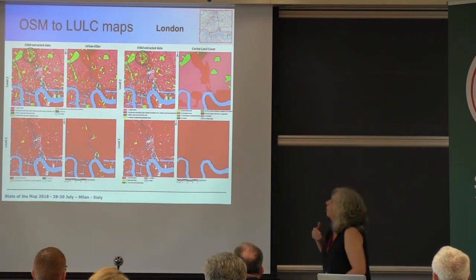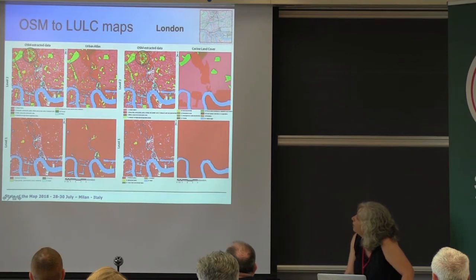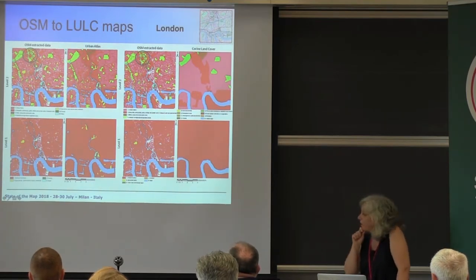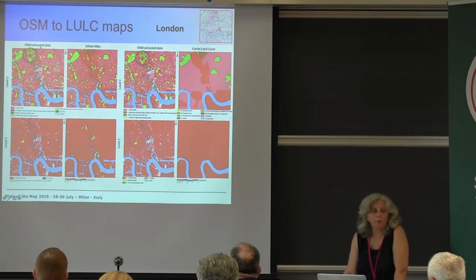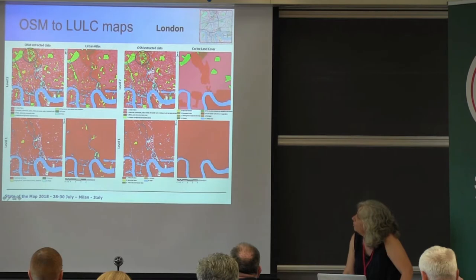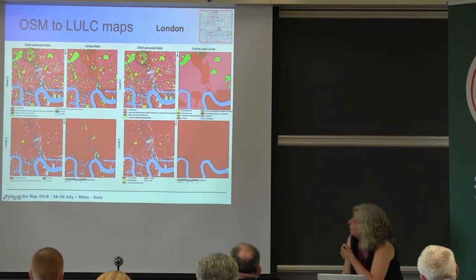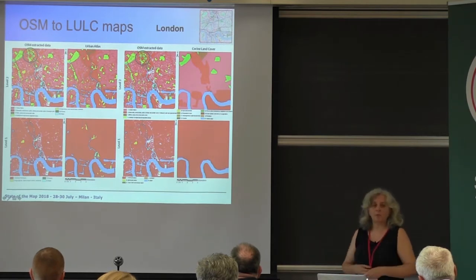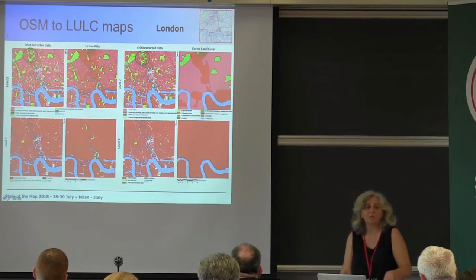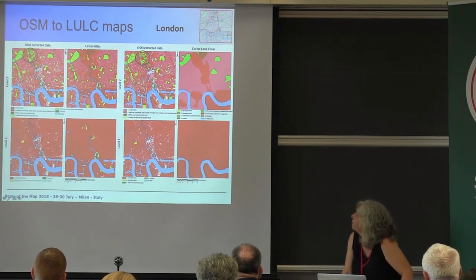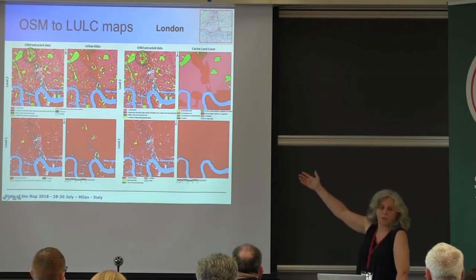These are examples showing the Urban Atlas official map from 2006 for a region of London at level 2 and level 1, alongside the result of conversion from OpenStreetMap data to the same nomenclature. One thing you can see is that these official maps take time to produce and are already out of date. Here you can see stadiums built for the Olympic Games which were not in the official maps, but we could already see them in our conversion. This is the same comparison for Corine Land Cover, where the minimum mapping unit is much larger, so we need a generalization process to compare properly.